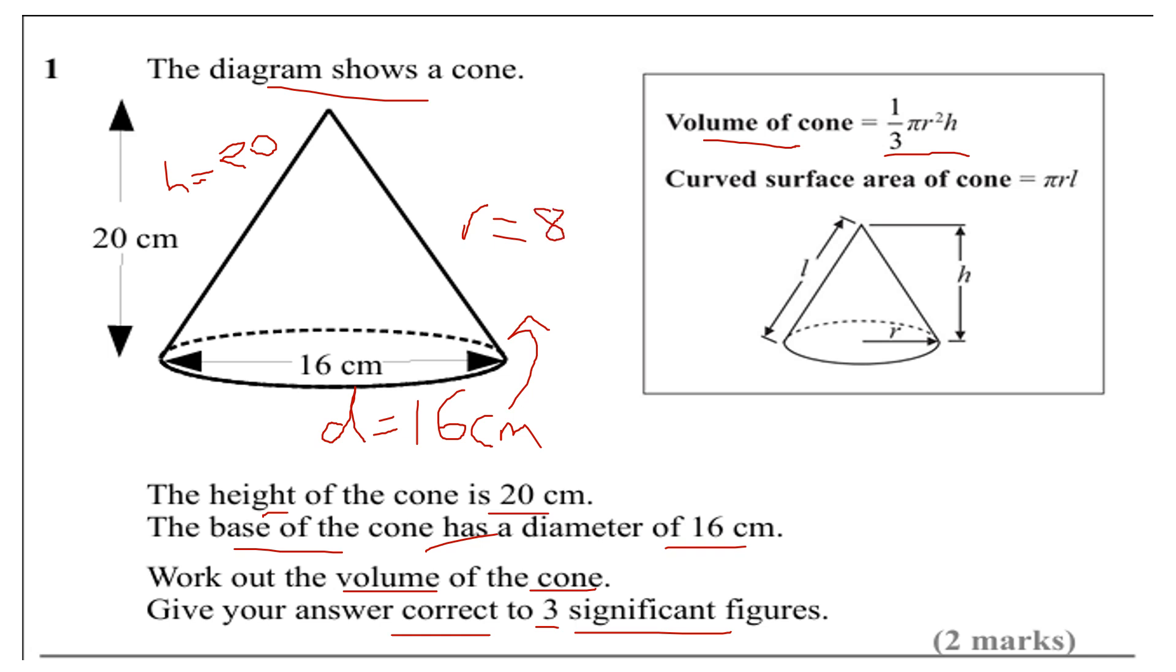We can now substitute these numbers or values into the formula to work out the volume. So volume equals one-third times pi times 8 squared times 20.